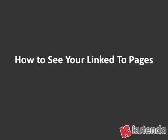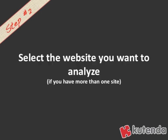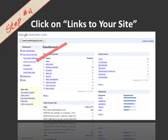You might wonder how do you see your linked-to pages? The answer is to use Google Webmaster Tools. The first step is to go to Google Webmaster Tools and log in. We showed you how to do that last week and how to get your account set up. Next, select the website you want to analyze if you have more than one. Then click on 'Your site on the web' in the Google Webmaster Tools interface, and from the options that appear, click on 'Links to your site.'